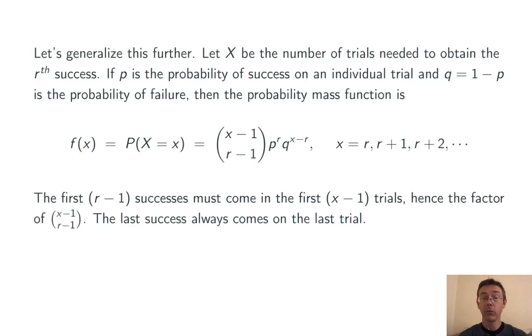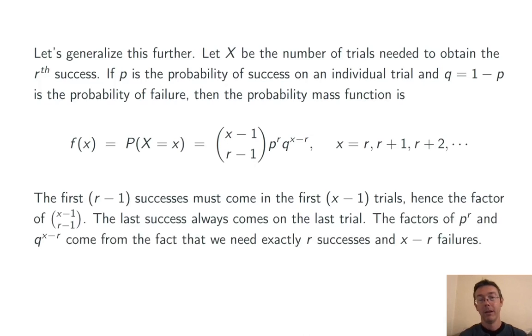The first r minus 1 successes must come in the first x minus 1 trials, hence the factor (x-1) choose (r-1). The last success always comes on the last trial. The factors of p to the r and q to the x minus r come from the fact that we need exactly r successes and x minus r failures.